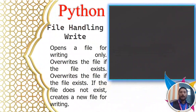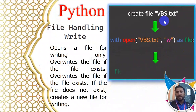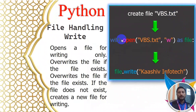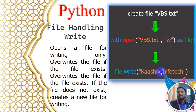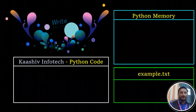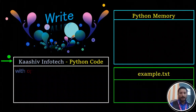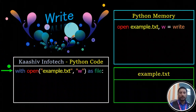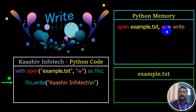Let's talk about file handling with a small example. If you want to create a file, you can call it VBS.txt and open it with write mode — `open('example.txt', 'w') as file`. You can see the write functionality being used here.